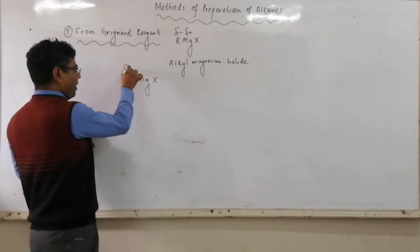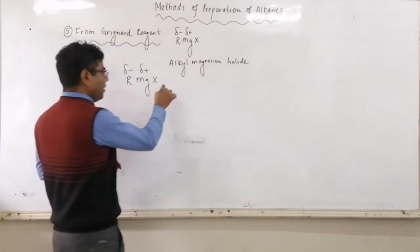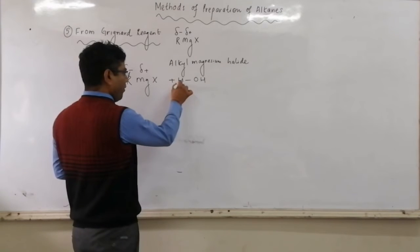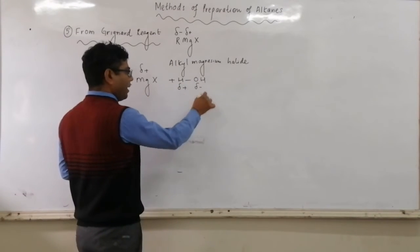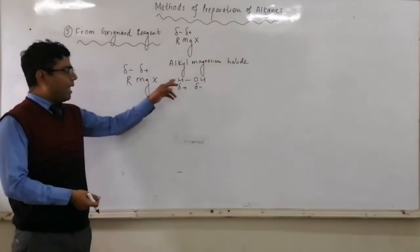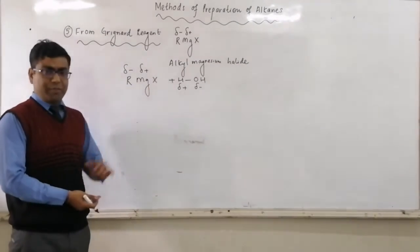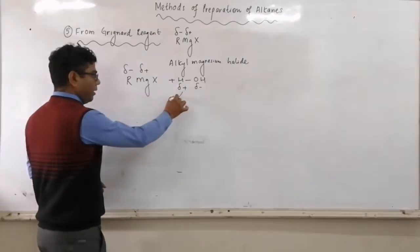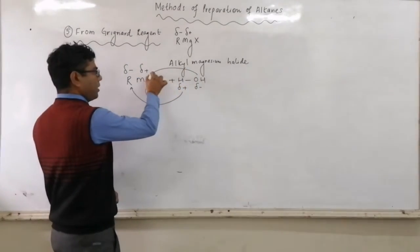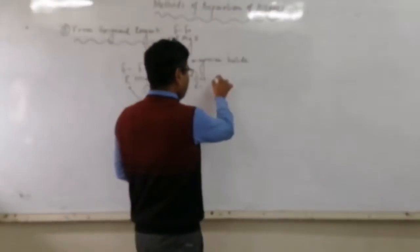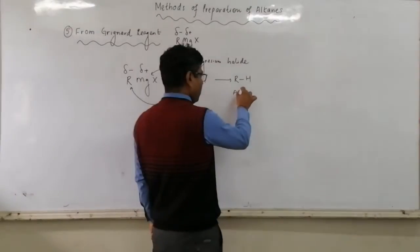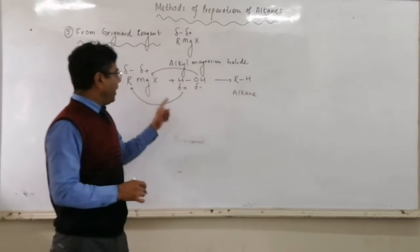Here RMgX — R having delta minus charge and Mg having delta plus charge — is made to react with HOH. Over hydrogen we have delta plus charge and over OH we have delta minus charge. Naturally, attack of opposite charges will take place. H, which carries delta plus charge, will attack over the negative carbon, and OH will attack over positive magnesium. So H with R gives you RH, which is the general representation of alkane.